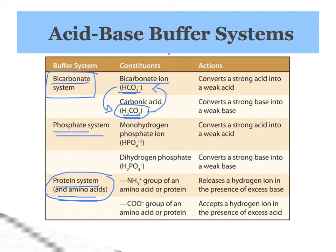The phosphate system is very important for buffering inside of cells, and it works similar to the bicarbonate. There are two different forms of the ion molecule based on phosphate: biphosphate and dihydrogen phosphate. One converts a strong acid to a weak acid — a weak acid doesn't ionize so hydrogen won't go into solution — and the other converts a strong base into a weak base, which again will not ionize and cause a change in pH. Inside the cells, we've got the phosphate system buffering things.